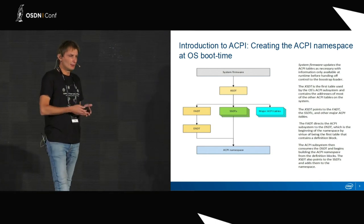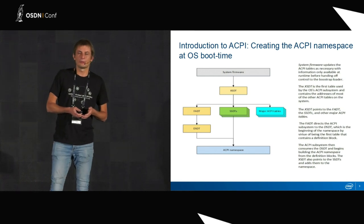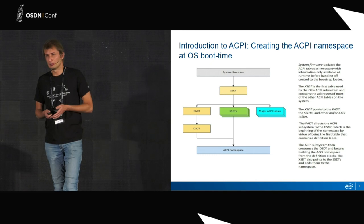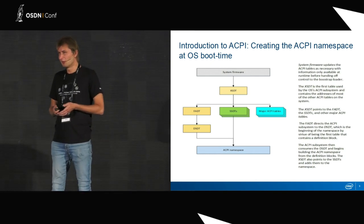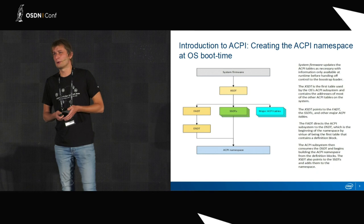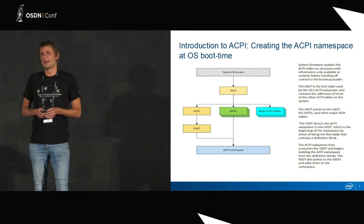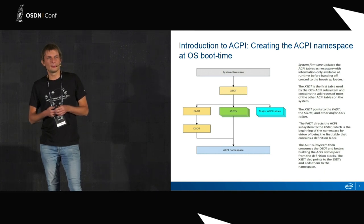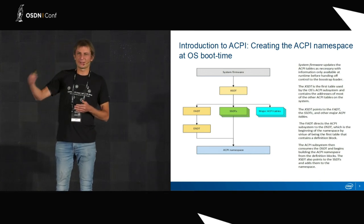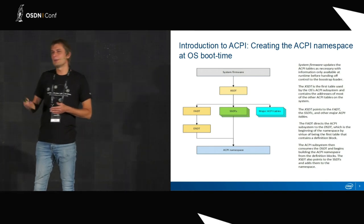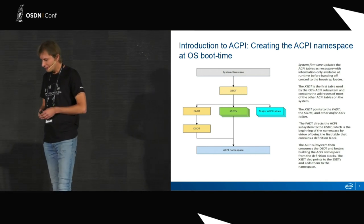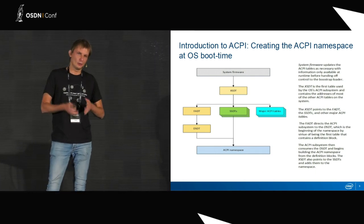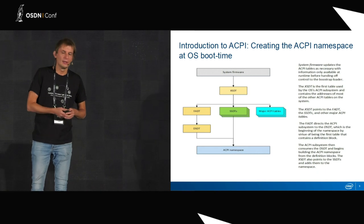When the operating system starts, it tries to find the root pointer description — the root pointer — followed by the root system description table. That system description table is basically a list of other tables. The first table is DSDT — the Differentiated System Description Table — which describes basically all devices and is the biggest table in ACPI.